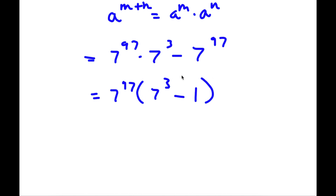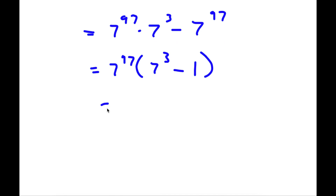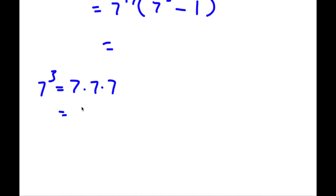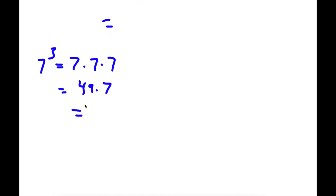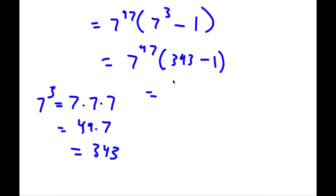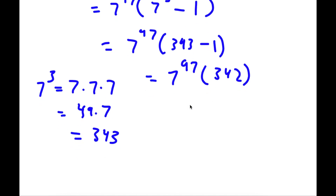So now I have 7 to the power of 97 times 7 to the power of 3 minus 1. Let's solve for 7 to the power of 3: that's 7 times 7 times 7. Seven times seven is 49, and 49 times seven is 343. So now I have 7 to the power of 97 times 343 minus 1. And 343 minus 1 is 342, so I have 7 to the power of 97 times 342. This is my final answer.